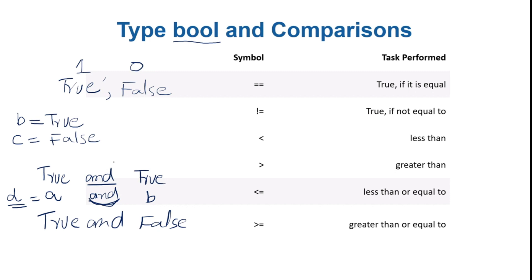There is another keyword: 'or'. False or False is False. If any one of the operands is True, then the result is True. Remember the difference: 'and' results False if any one of the two operands is False — it returns True only if both operands are True. 'or' returns False only if both operands are False, otherwise it returns True.